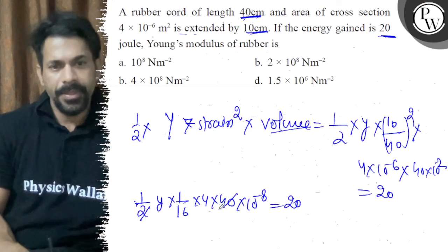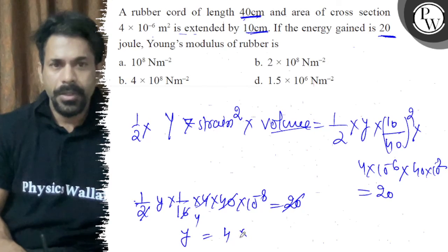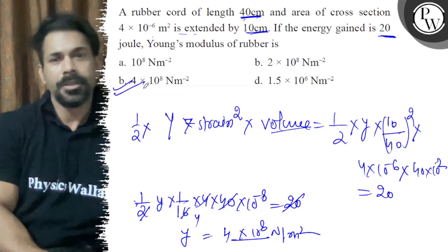So you'll get 20, 40, 20, 1 by 4. So y is equal to 4 into 10 power 8 newton meter square. So right answer is B. All the best.